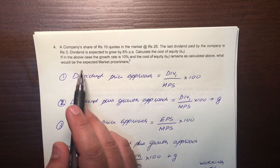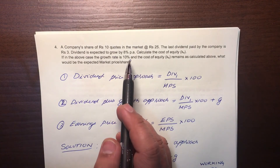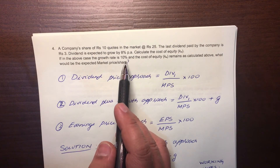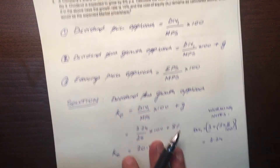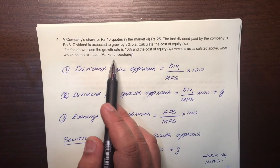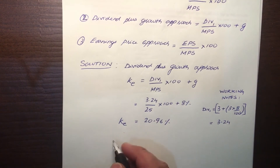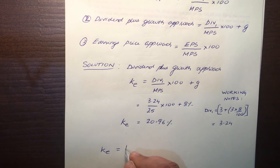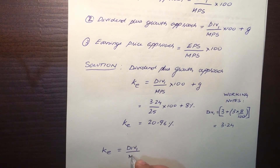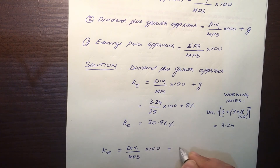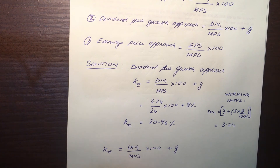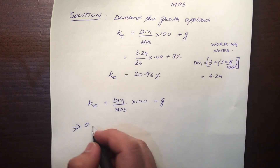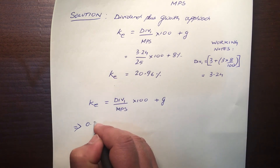Now let's look at the second part of the problem. The growth rate is now 10% instead of 8%, and the cost of equity remains as calculated above, so KE will be 20.96%. We need to find the expected market price per share. KE equals DIV1 divided by MPS into 100, plus the growth rate. Converting KE: 0.2096.